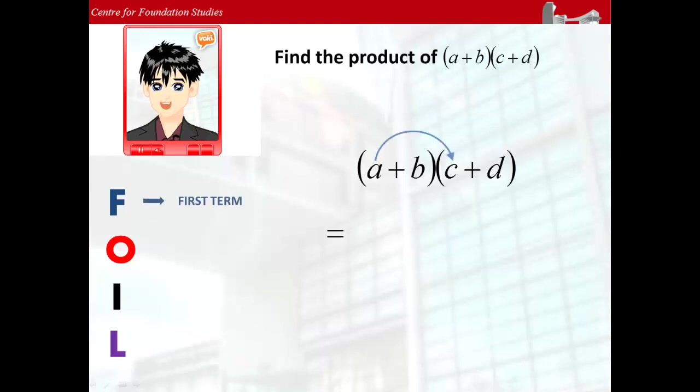Starting with the first letter F, we multiply the first term of each bracket, which is a and c, giving ac.